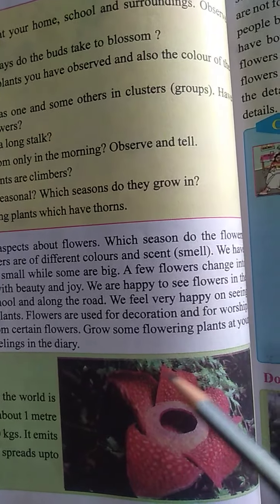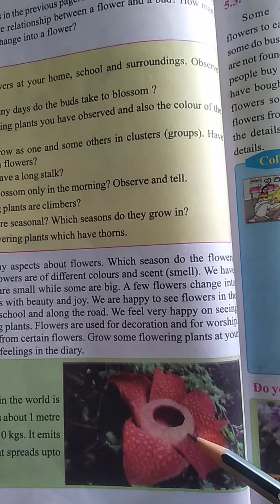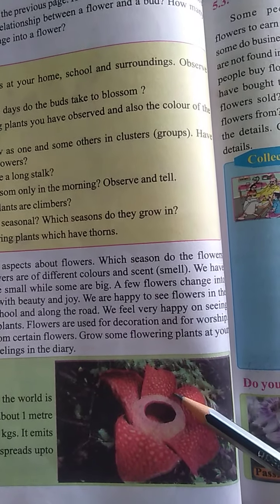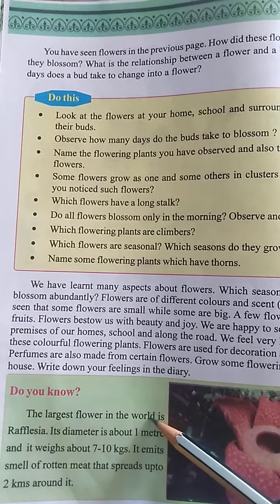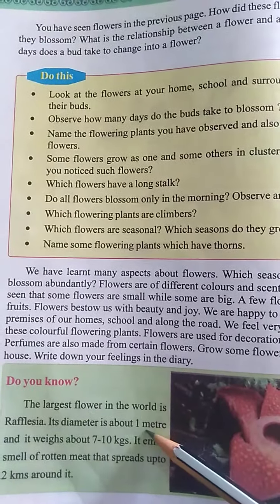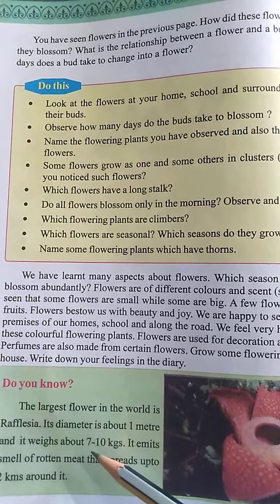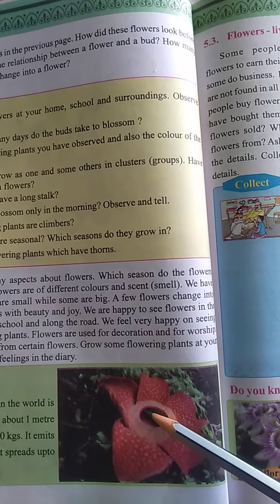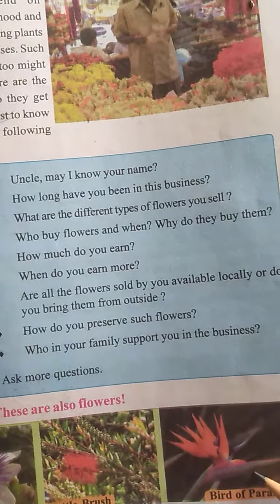Then we saw one big flower also. Which flower is it? It is Rafflesia. This flower is the largest flower in the world. How big is it? It is about one meter. And what is the weight of this flower? It is about 7 to 10 kgs. This is called the Rafflesia flower. There are three more flowers which we saw: Passiflora, bottle brush and bird of paradise.